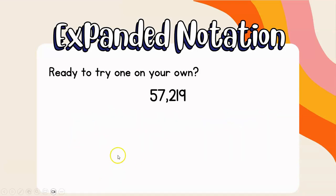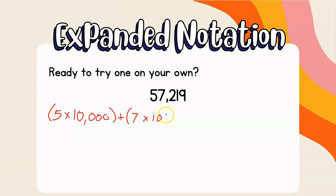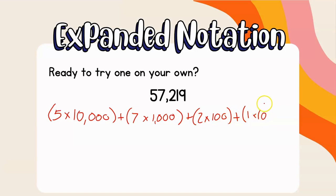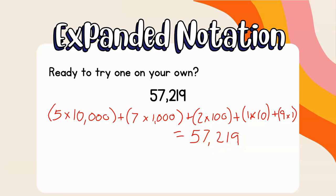Here's another one — a little longer: 57,219. Pause the video, write down your answer, then come back and double-check. The 5 is in the ten thousands place, so (5 times 10,000) plus (7 times 1,000) — don't forget your commas — plus (2 times 100) in the hundreds place, plus (1 times 10), plus (9 times 1), equals 57,219.